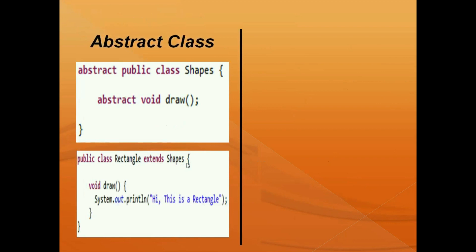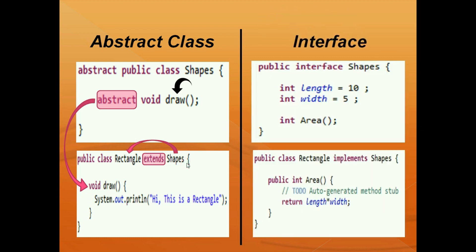In case of abstract class, if methods are abstract, we need to implement them in the extended subclass. But in case of interface, whenever we want to inherit from the interface, the interface can only be implemented, not extended, as we do with a class. We are implementing, not extending. Whenever we want to inherit from an interface, there is no class keyword in the shape interface, so we cannot extend from an interface into a class — we need to implement it using the keyword implements.